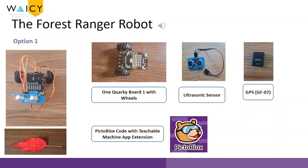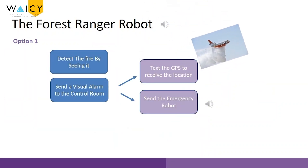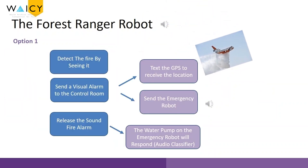For the ranger robot, we have two options. Option one: we use Pixoblux code with Teachable Machine app extension. These are the main parts. The robot will detect the fire by seeing it and send a visual alarm to the control room.